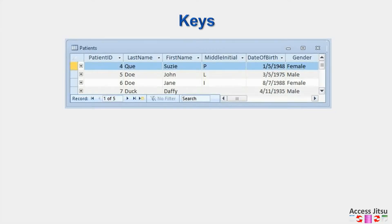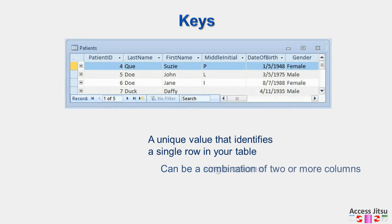So, keys. What is a key? A key is a unique value that identifies a single row in your table. It can be a single column in your table. It can be a combination of two or more columns in your table. If it is a combination of two or more columns, it's called a composite key.